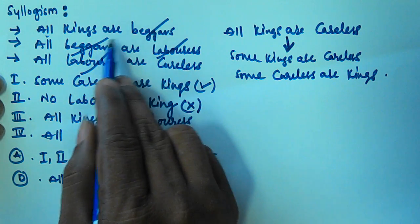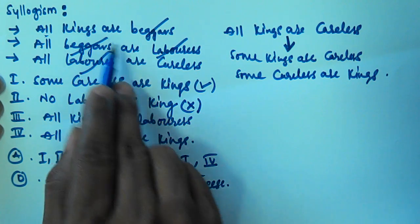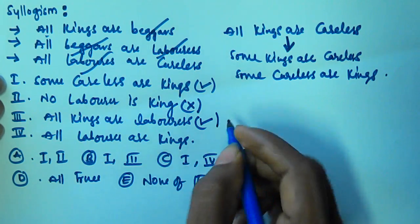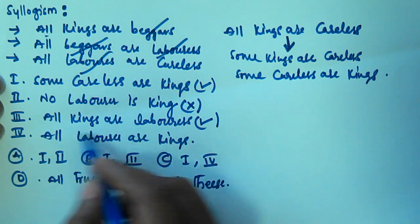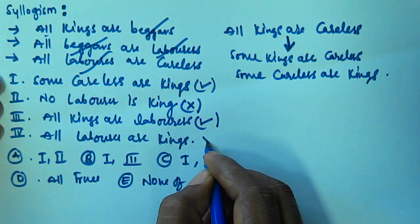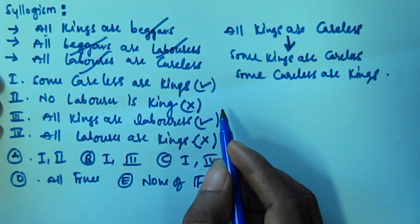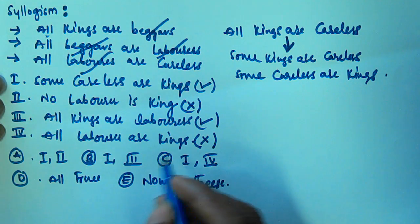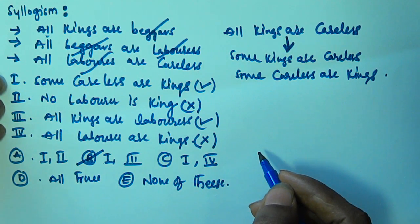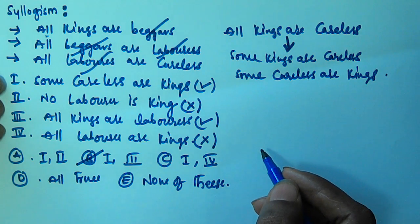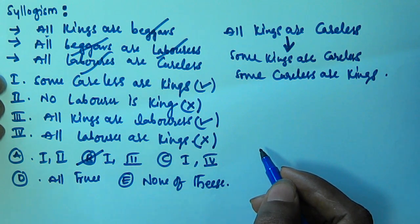Conclusion 3: all kings are laborers — beggars cancel, and by the all-plus-all rule, all kings are laborers, so this is true. Conclusion 4: all laborers are kings — when you interchange kings and laborers you only get some laborers are kings, not all, so this is false. So only conclusions 1 and 3 are true, meaning option B is the answer. I hope you got this — this is the last video in the series of syllogisms. Thank you very much for watching and please subscribe to my channel.